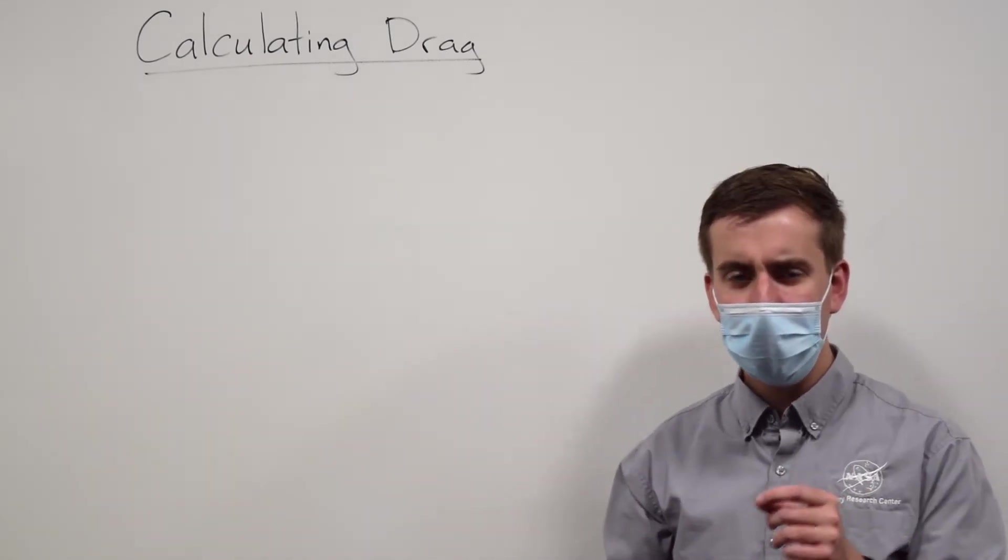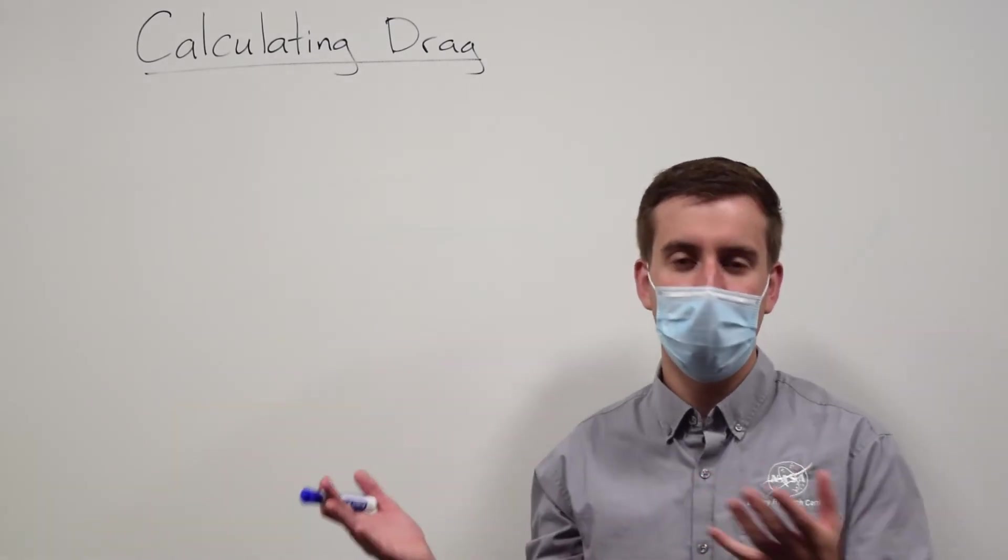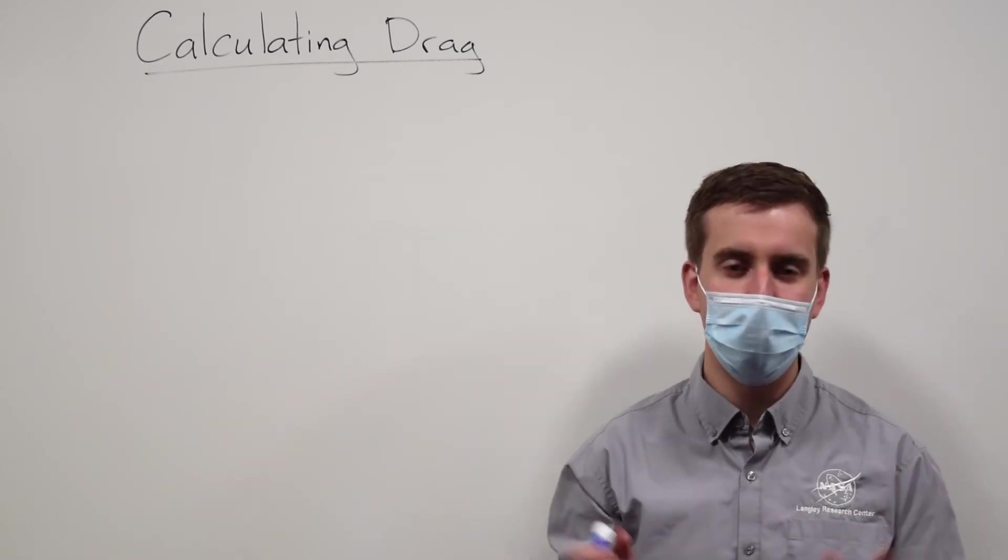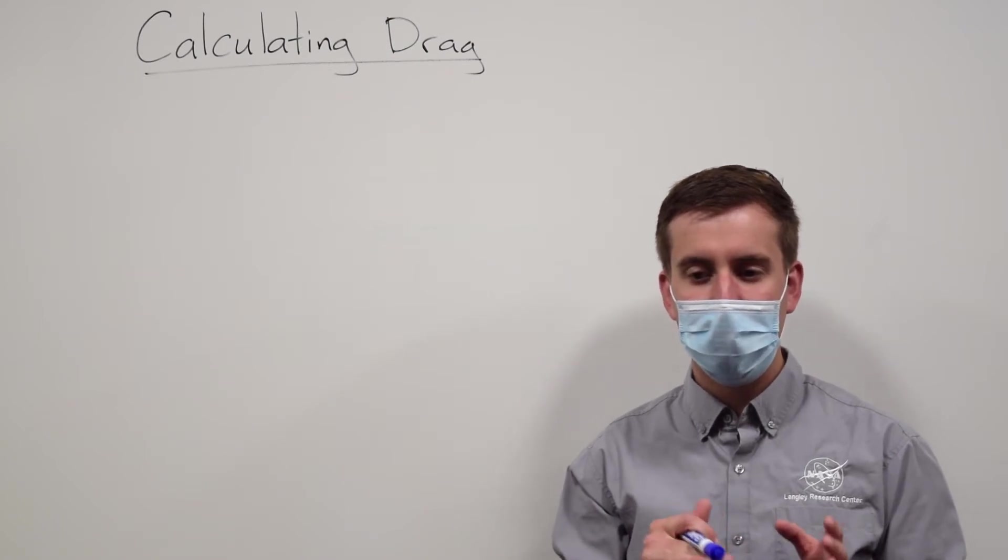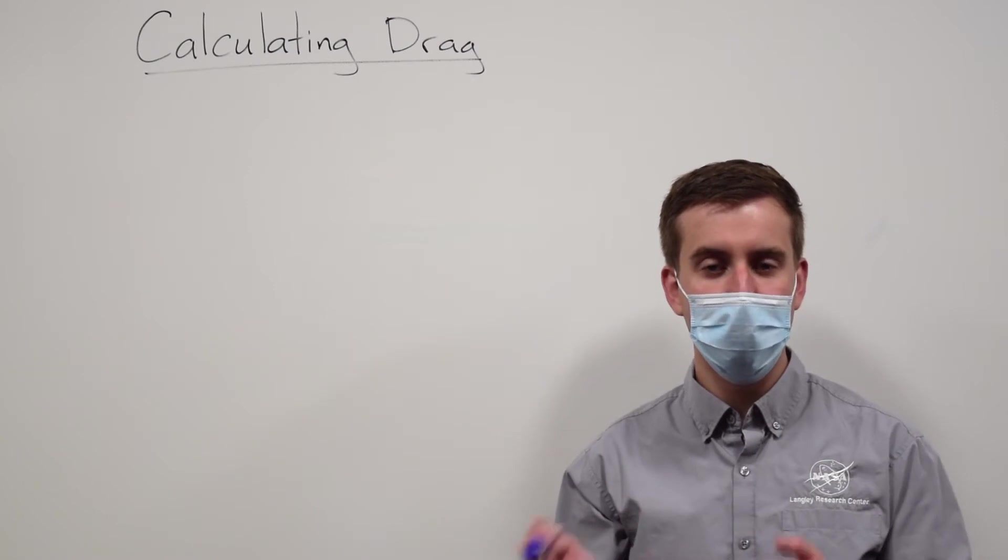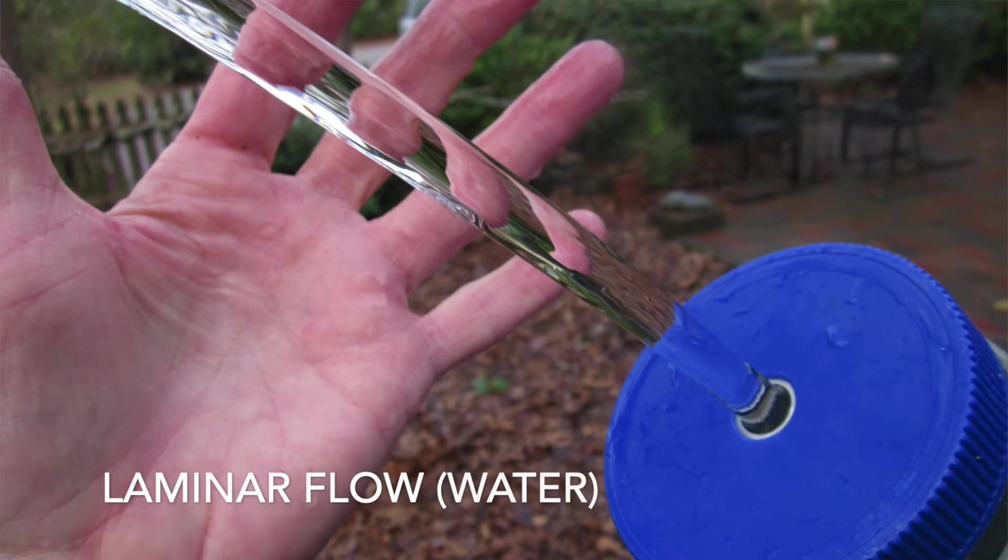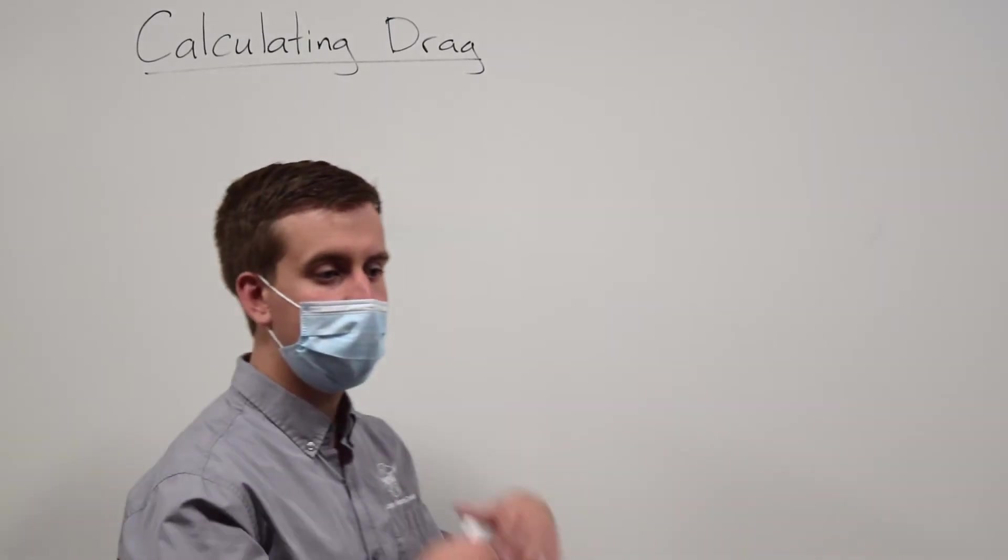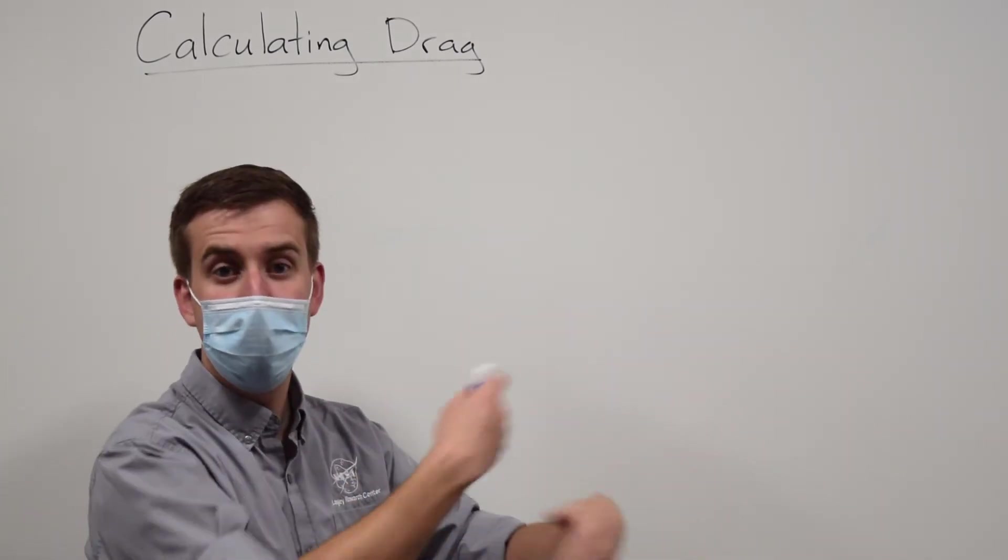The Reynolds number is basically a measurement of how fast our airplane is going mixed with some other properties of the air. For now we're going to think about it more in terms of whether or not it makes the airflow turbulent or laminar. Laminar just means smooth basically. So if you have laminar airflow, it's smooth airflow, it hasn't become turbulent as it usually does eventually.